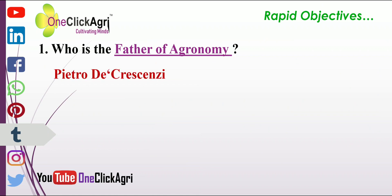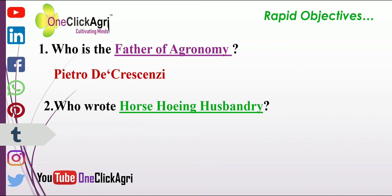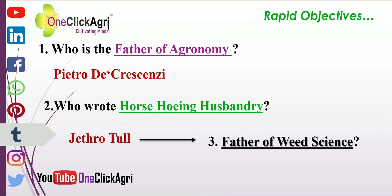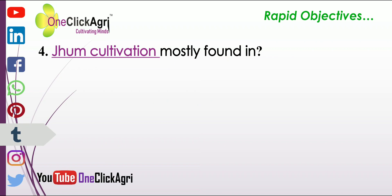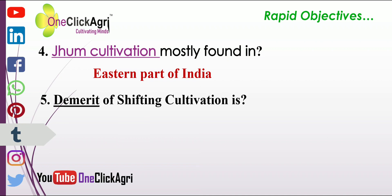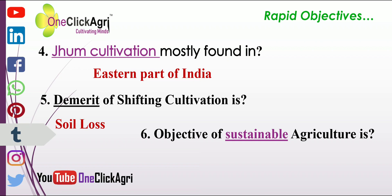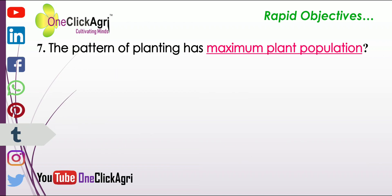Who is the father of agronomy? Pietro de Crescenzi. Who wrote the book on horse-hoeing husbandry? Jethro Tull — he is also the father of weed science. Jhoum cultivation is mostly found in the eastern part of India. The demerit of shifting cultivation is soil loss.